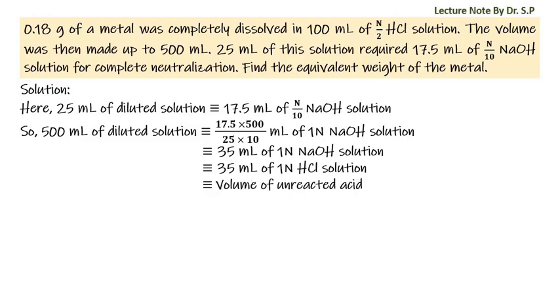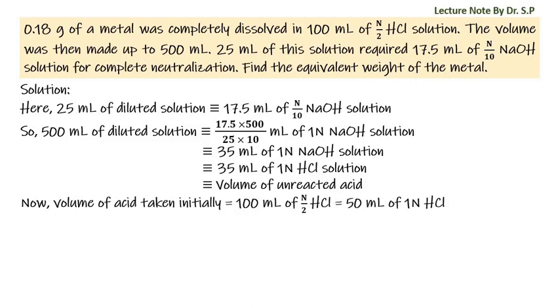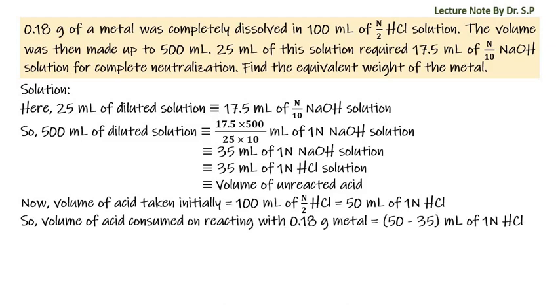This is equal to volume of unreacted acid. Now, volume of acid taken initially is equal to 100 ml of N by 2 HCl, that is equal to 50 ml of 1N HCl. So volume of acid consumed on reacting with 0.18 grams metal is equal to 50 minus 35 ml of 1N HCl, that is equal to 15 ml of 1N HCl.